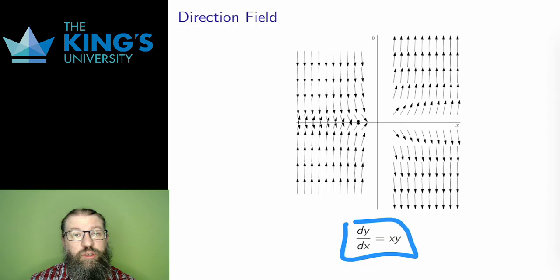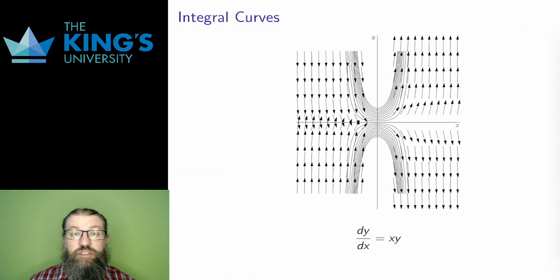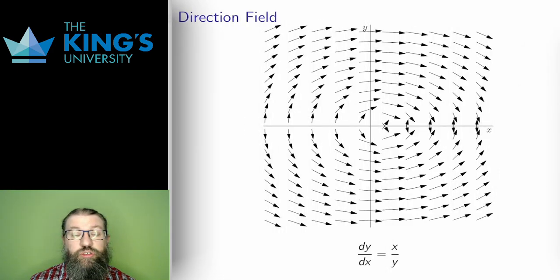Here's another for dy over dx equals x times y. Again, this is pretty similar, with positive and negative slopes divided by quadrants and slopes steeper the further they are away from the origin. And I get to get solutions that look a bit like parabolas, although the shapes are again a little bit different than the previous one. These are defined everywhere, no discontinuities here. And again, I've got a pretty good picture of how this function will behave.